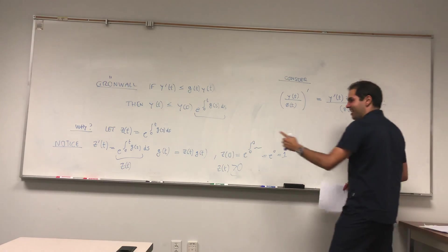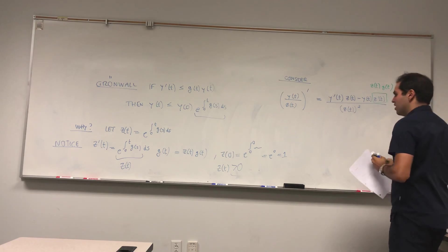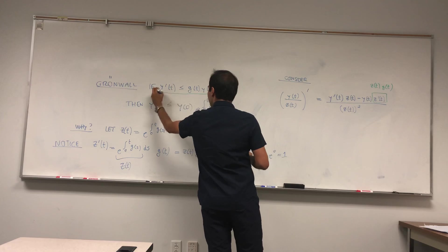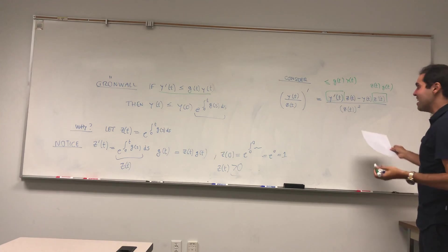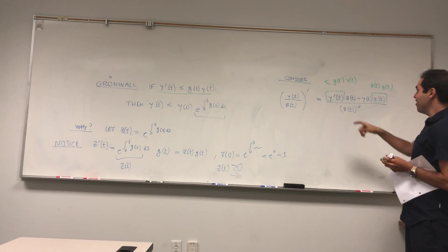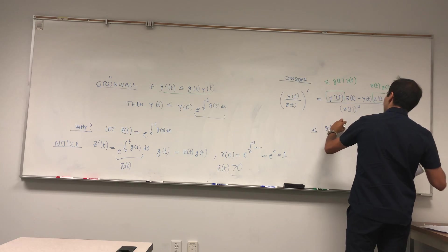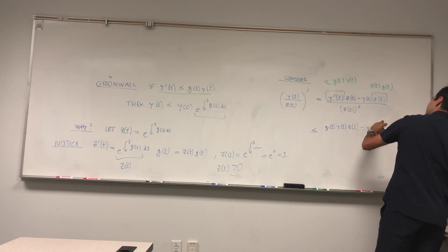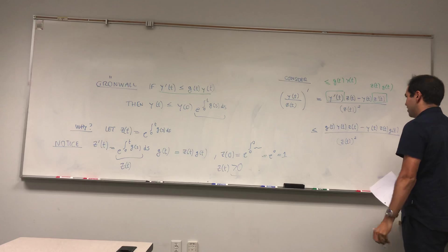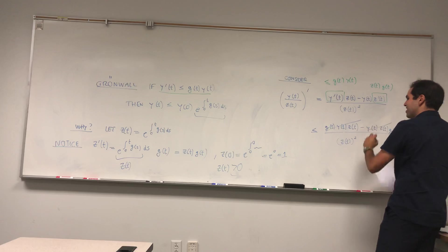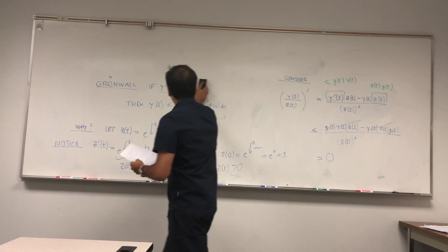We know z'(t) = g(t)·z(t). And we know y'(t) ≤ g(t)·y(t). It doesn't matter what sign g has — all that matters is that z is positive. So the numerator is ≤ g(t)·y(t)·z(t) − y(t)·g(t)·z(t), all over z(t)². Those two terms cancel, giving ≤ 0. So y(t)/z(t) is a decreasing quantity.